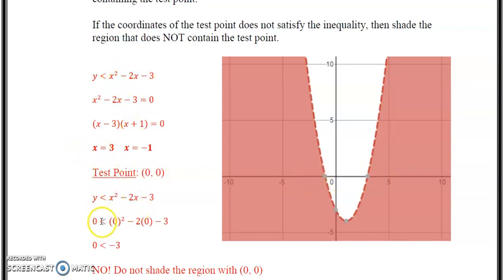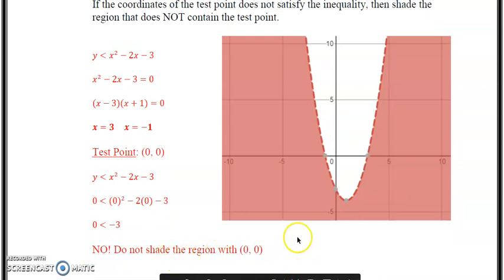Substitute it back into the original inequality. So 0 is less than 0 squared minus 2 times 0 subtract 3. Is 0 less than negative 3? No. Do not shade the region with 0, 0.